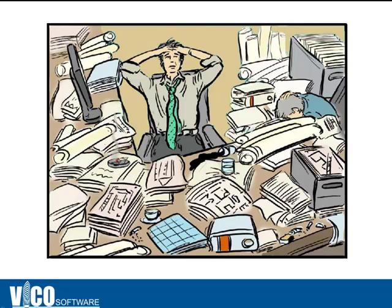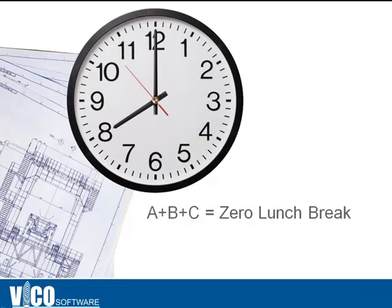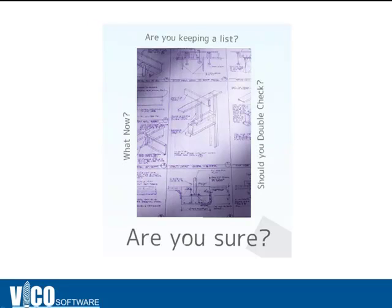Think about your current process and how you would check for changes between the old set of drawings and the newer set. And once you've thought about that, think about the time it takes to comb through both sets to verify that all the design changes made actually made it into a cloud. How can you be sure you didn't miss anything, and how do you keep track of all the changes you were able to find?